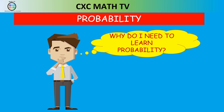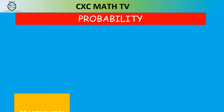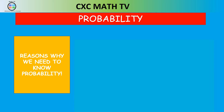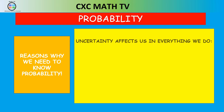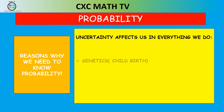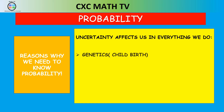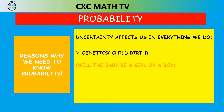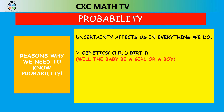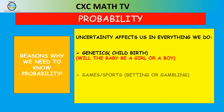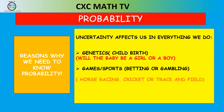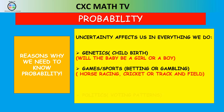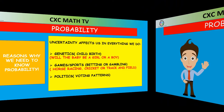We need to know probability because uncertainty affects us in all aspects of life — in genetics, for example, when a child is being born we don't know whether the baby will be a girl or a boy, but biologists who study chromosomes need to make predictions. If you're into sports, gambling, or betting on horse racing, cricket, or track and field, you have to use probability. Those in politics need to study voting patterns and trends.